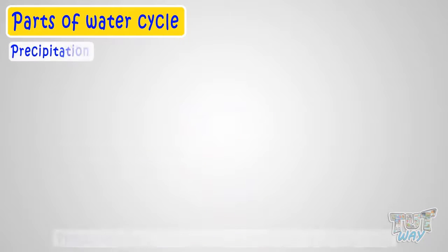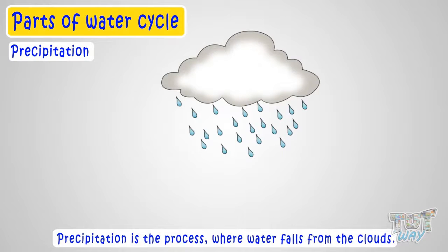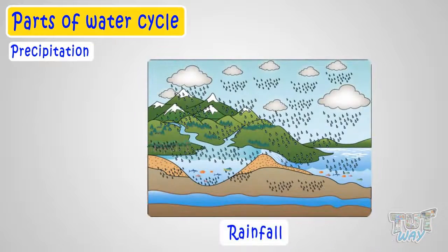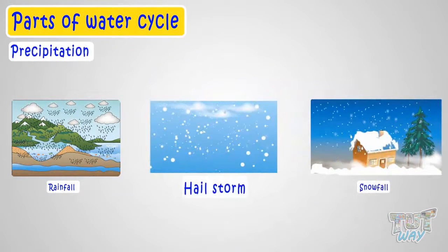Precipitation. Precipitation is a process where water falls from the clouds. It can be a rainfall, snowfall, or hailstorm.